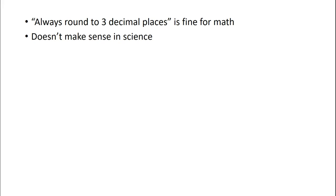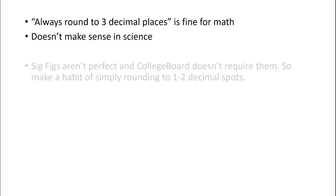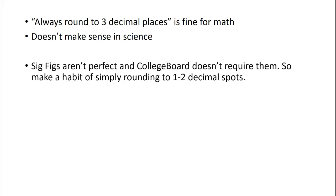So here's our conclusion. Always rounding to three decimal places is okay with math. It is not okay for science, because that decimal place represents how true you think your answers are. Sig figs, if you know them, solve a lot of the problems I just talked about. But sig figs have their own flaws, and the College Board doesn't require sig figs. So let's not spend any time memorizing sig figs when the AP exam isn't going to require you to use them anyway.